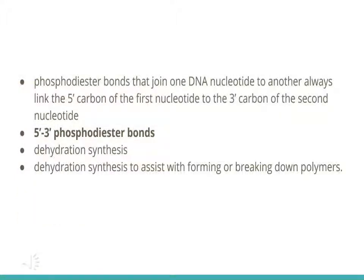The phosphodiester bonds that join one DNA nucleotide to another always link the 5'-carbon of the first nucleotide to the 3'-carbon of the second nucleotide. This forms a covalent bond between the oxygen sticking off the 3'-carbon of the second nucleotide and the phosphorus atom in the phosphate group that sticks off the 5'-carbon of the first nucleotide. These bonds are called 5'-3' phosphodiester bonds. Each time nucleotides are bound together, a water molecule is removed through a process called dehydration synthesis.